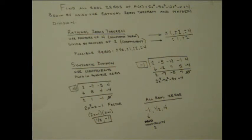From this, we can derive that our remaining zeros are 1 half and negative 1. So the real zeros for this equation are negative 1 with a multiplicity of 2, since it occurs twice, 1 half and 4.